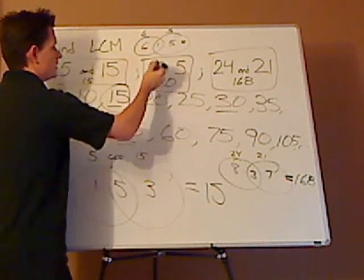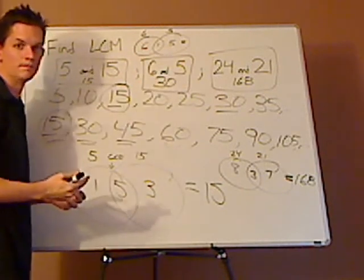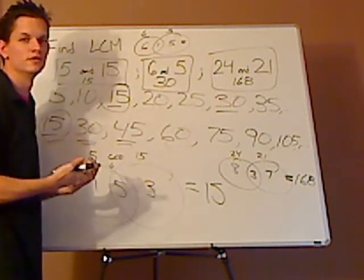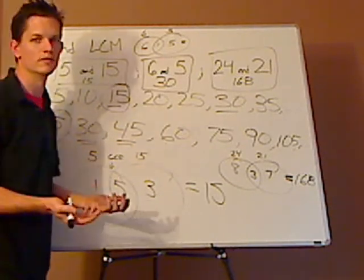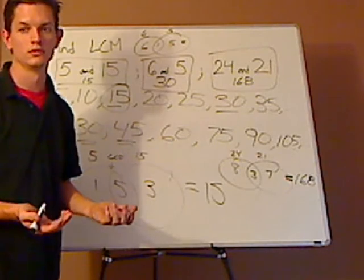And on the top. Now, if they're relatively prime, then what you can do is just simply multiply them together. And that will give you the LCM as well.